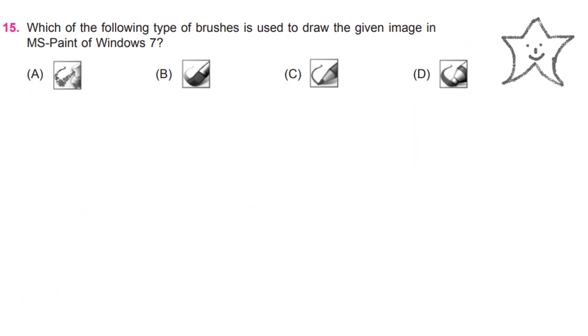Which of the following type of brushes is used to draw the given image in MS Paint of Windows 7? Answer is C.